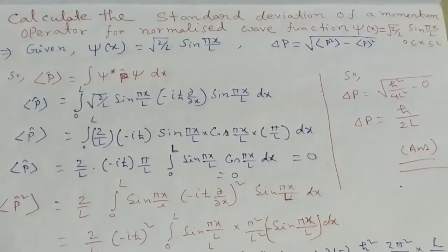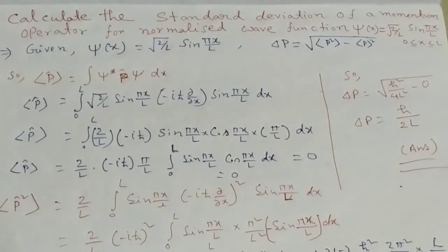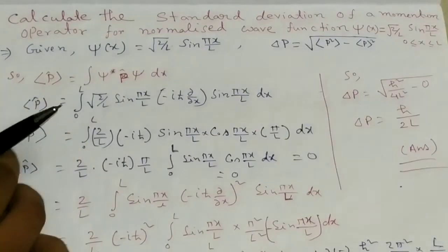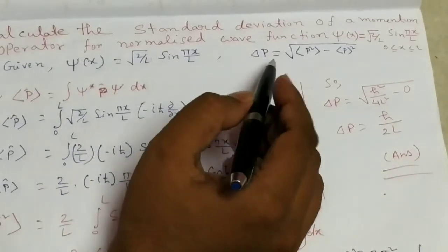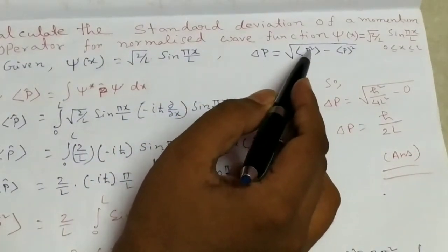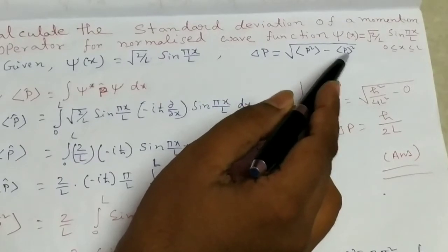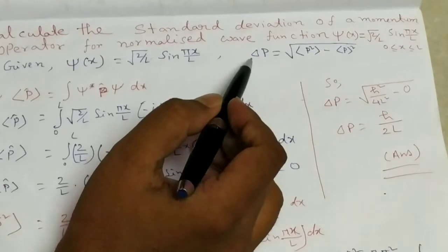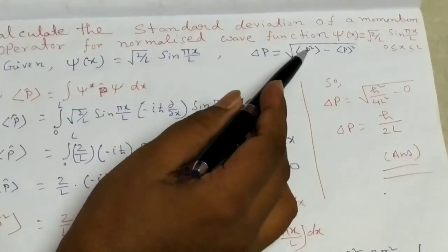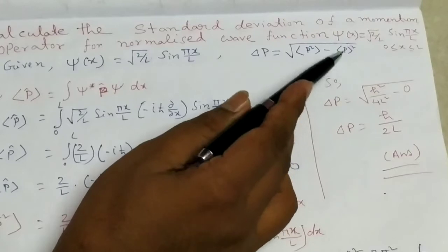Here we calculate the standard deviation of the momentum operator. We know the relation: sigma of p equals the square root of the average of A-squared minus the average of A squared. Here we calculate momentum, so delta-p equals the square root of the average of p-squared minus the square of the average of p.